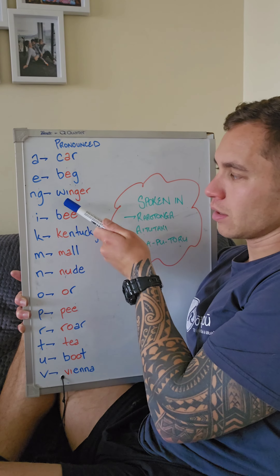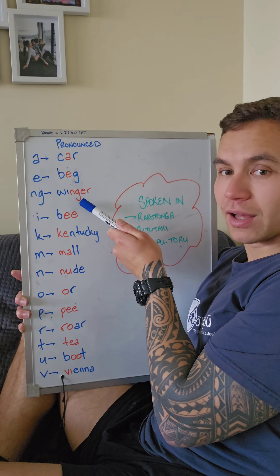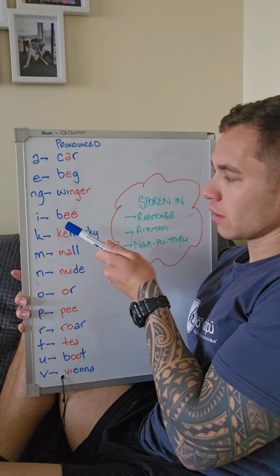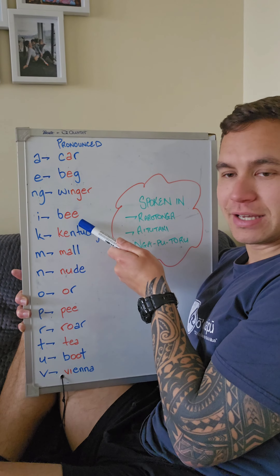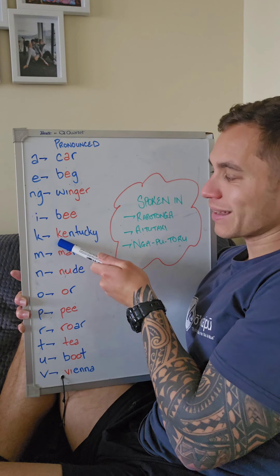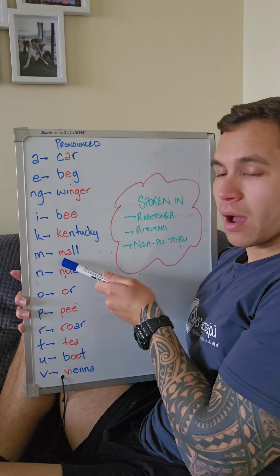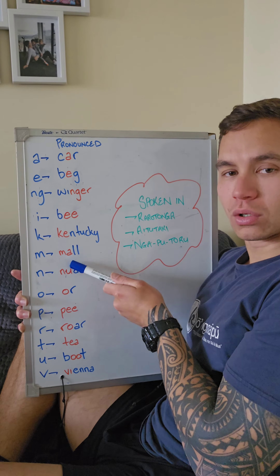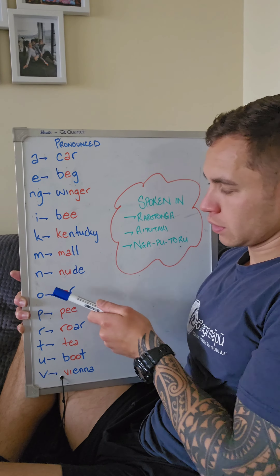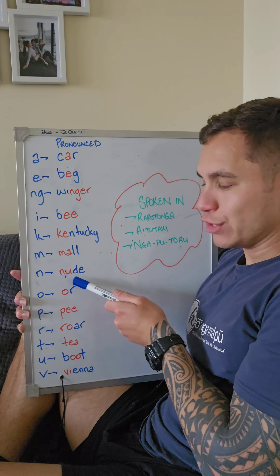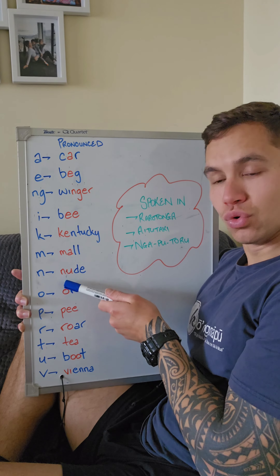For example: wenga — ngā. B — e. Kentucky — ke. Mo — mo. Nude — nu.